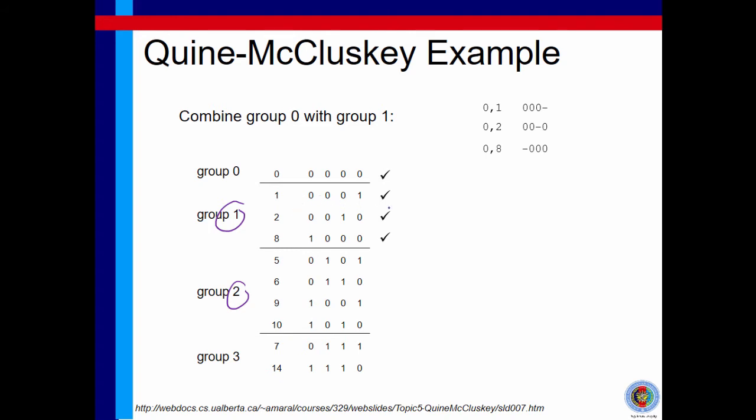First, we need to compare minterm 1 with minterm 5. How many changes are there? Here, obviously, there is only one change in variable b. In this case, the rest, variable a stays 0 to 0, variable c 0 to 0, variable d 1 to 1.